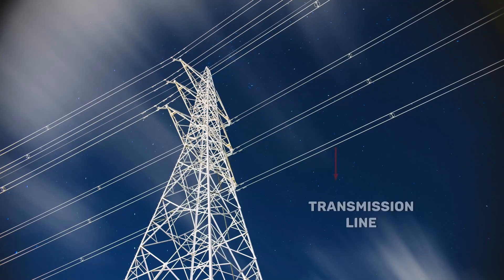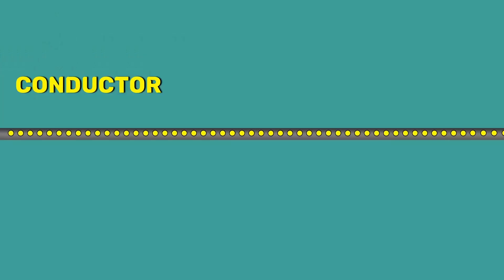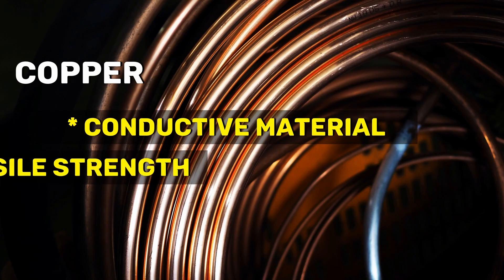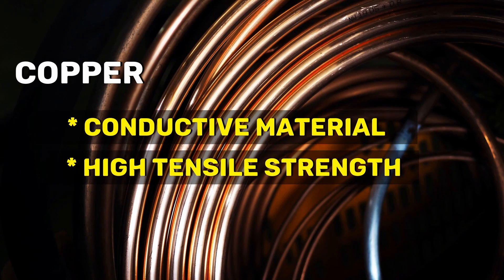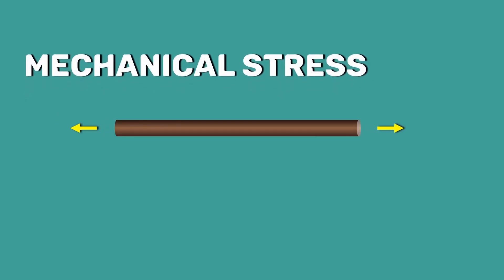A transmission line is nothing but a conductor which allows electricity to flow through them easily. The most common conductive material is copper. It also has high tensile strength, which means it can withstand mechanical stress. Therefore, in earlier days, copper was used as an electrical transmission line material.